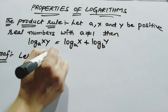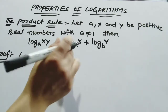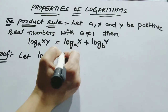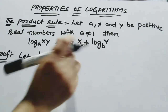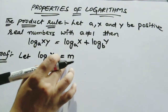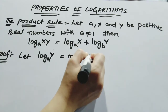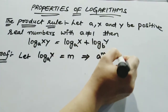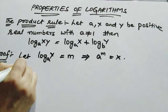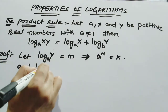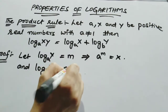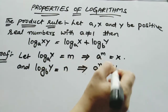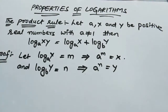We have to prove it. Let log x base a equal to m, so converting to exponential form: a to the power of m is equal to x. And log y base a equal to n means a to the power of n is equal to y — so we have x and y.